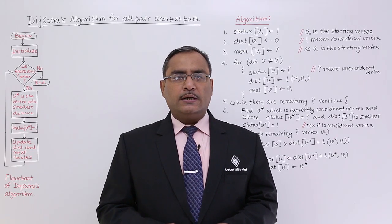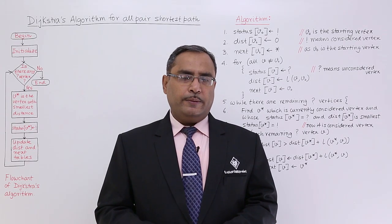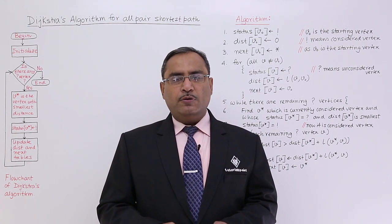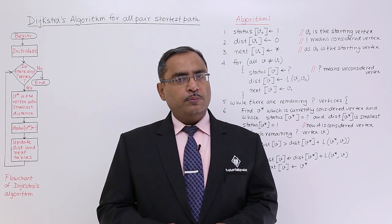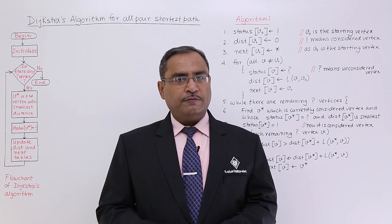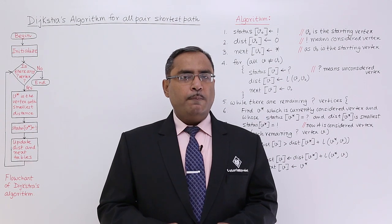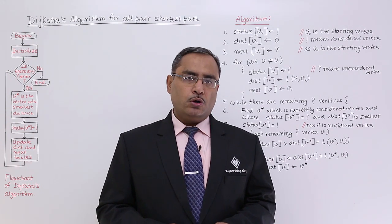In this session, we are going to discuss Dijkstra's algorithm for all pair shortest path. That means a graph will be given to us. This algorithm will execute on that particular graph and it will find out the minimum path possible between any pair of nodes.